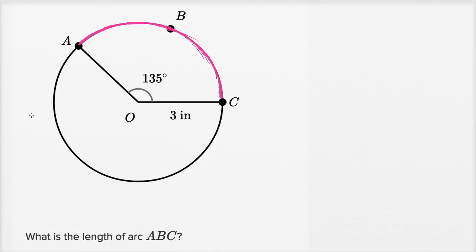But let's first think about the circumference. The circumference of a circle is equal to 2π times the radius of the circle, and they give us the radius as three inches. So the circumference is going to be 2π times 3 inches. Or 2 times 3 is 6 times π, so it's going to be 6π inches.